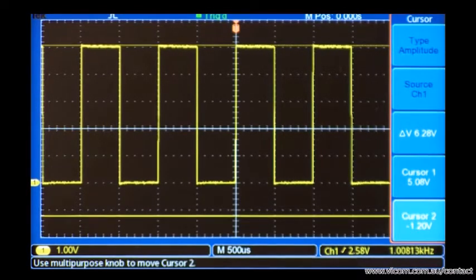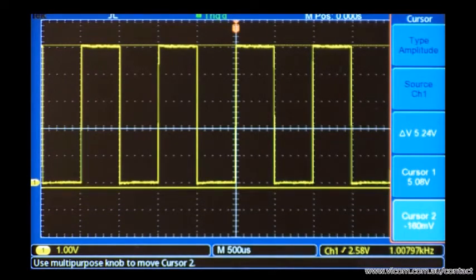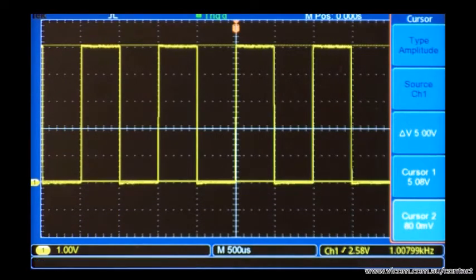Next, I'll position the second cursor on the lowest point. The delta-V measurement shows the voltage difference between the cursors. In this case, it's the 5 volts peak-to-peak voltage of the signal.